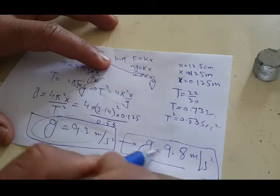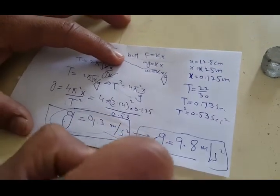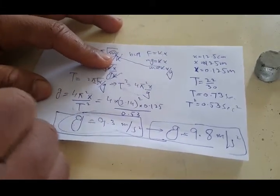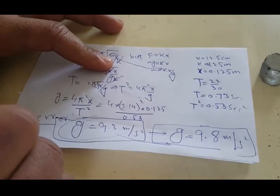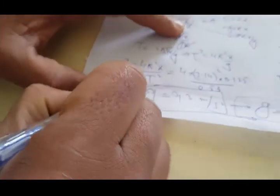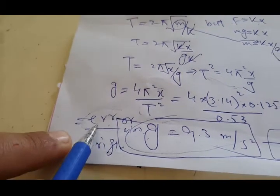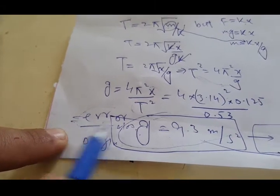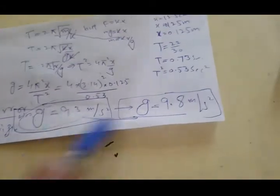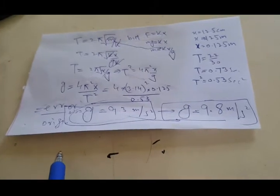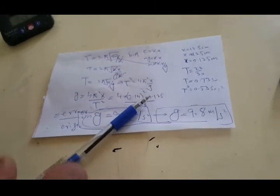There are some real factors and experimental errors involved, which is why our answer deviates from the actual value. However, the variation is not large. To measure the percentage error, find the difference between the measured and actual value, divide by the original value, and multiply by 100 to get the percentage error.